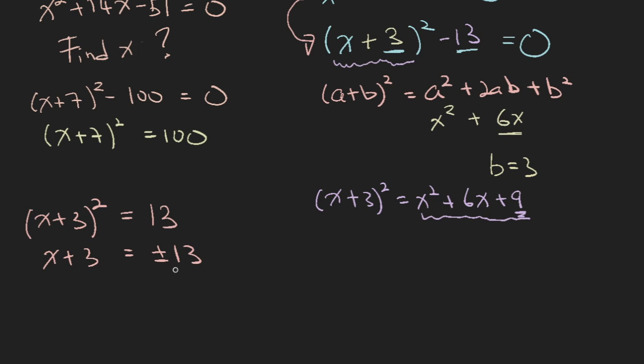But minus square root of 13 times minus square root of 13 will also give you 13. So x will be equal to square root of 13 minus 3 or minus square root of 13 minus 3.